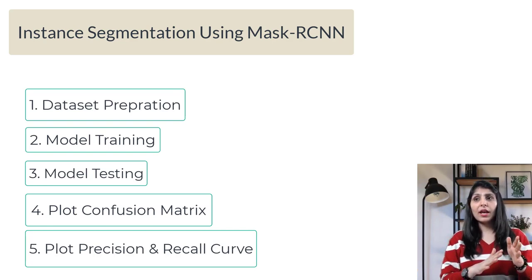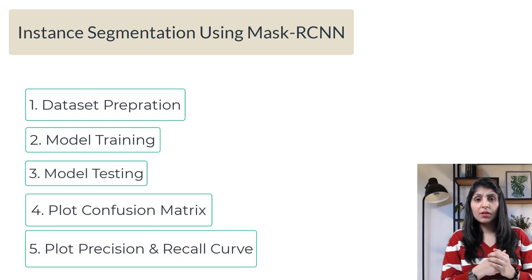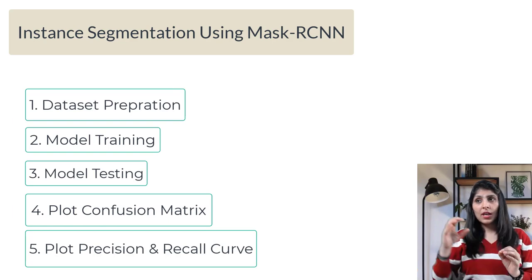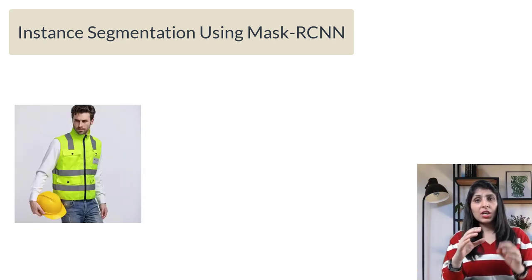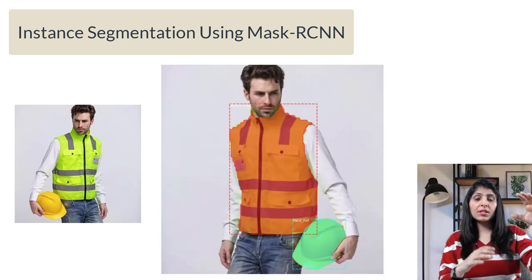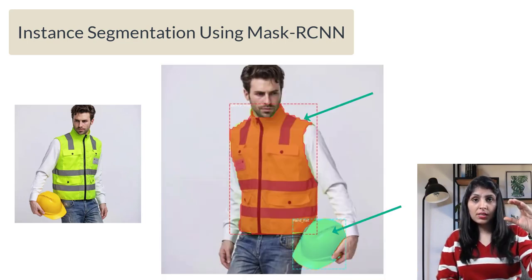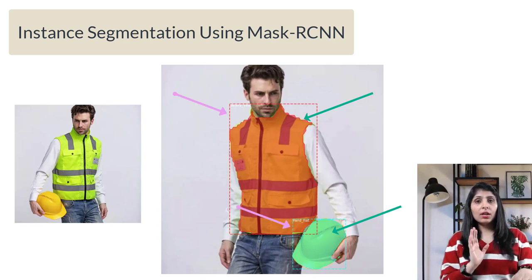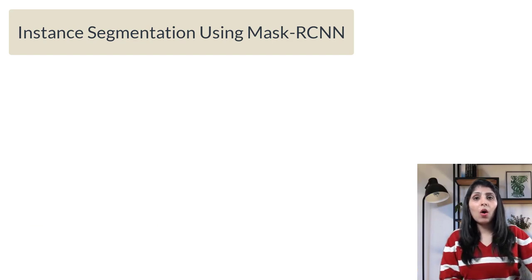Before moving to the practical implementation, let me give you a brief idea about Mask RCNN and how it actually works. What Mask RCNN does is it takes an input image and gives you an output image with object masks, bounding boxes, and class labels.